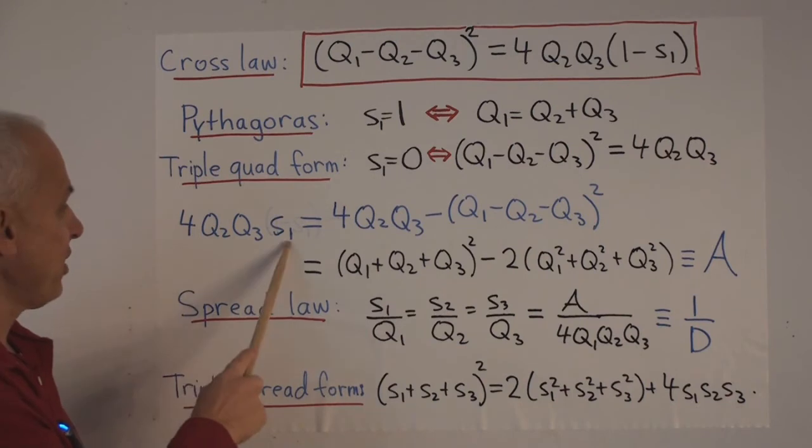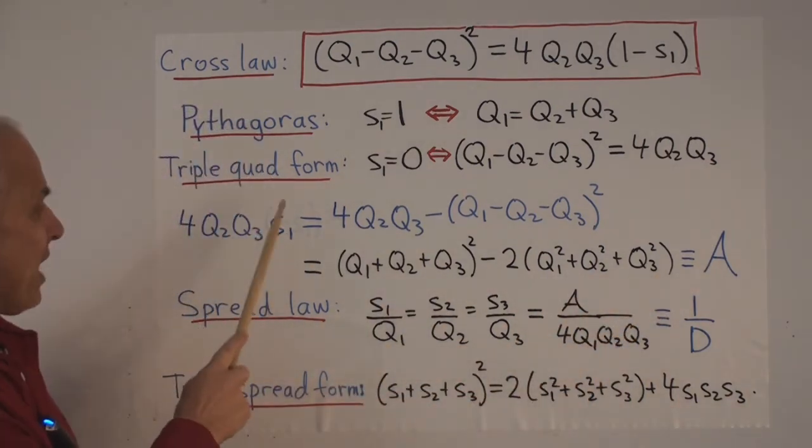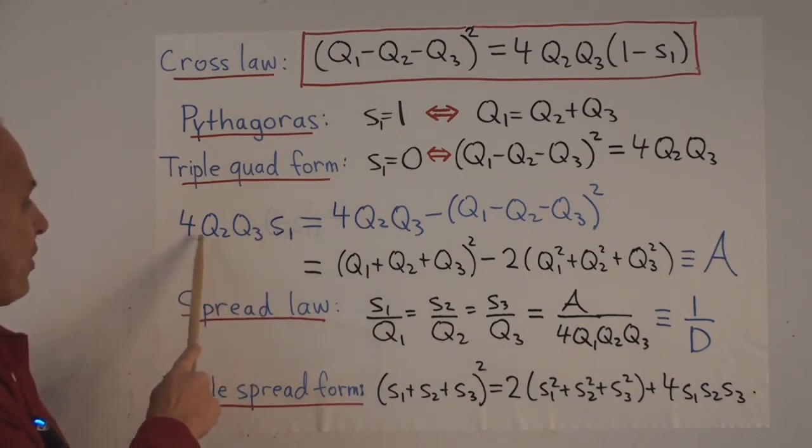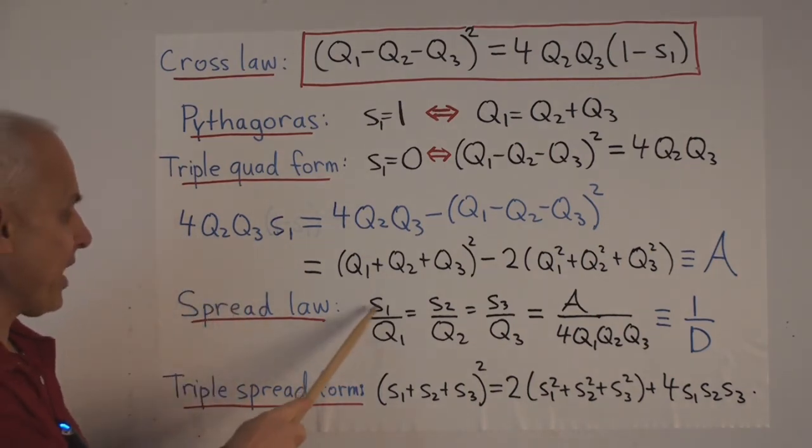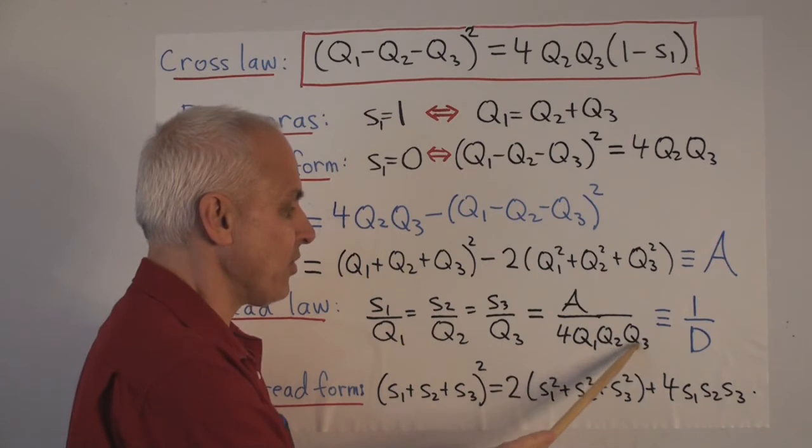So this is an expression. This quantity here is always equal to the quadrea. Now if you divide this by 4 times Q1 times Q2 times Q3, then you'll get S1 over Q1, and you'll get this quadrea divided by 4Q1Q2Q3.